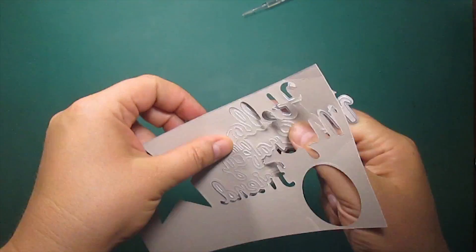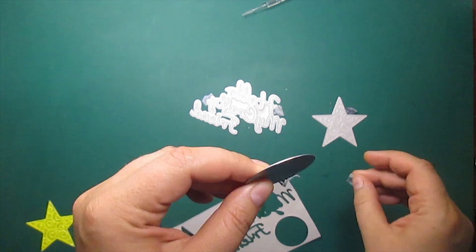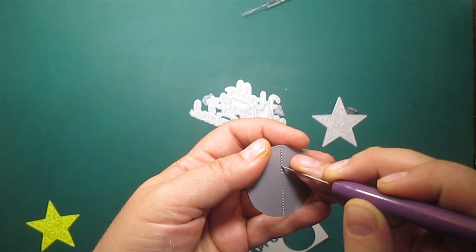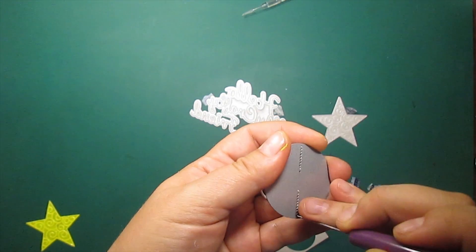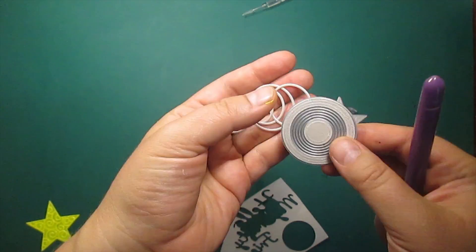I've die cut a sentiment, one more star, and a bunch of ringlets out of silver gray cardstock. This small die actually cuts out nine thin rings at a time.